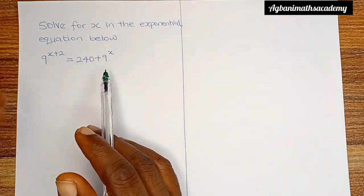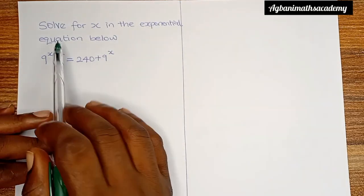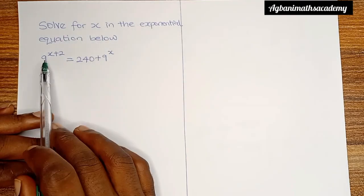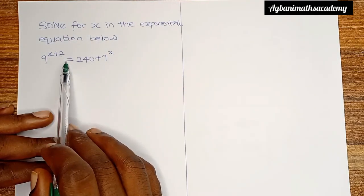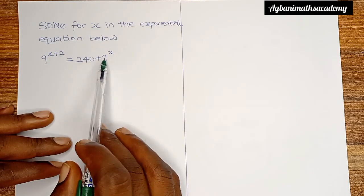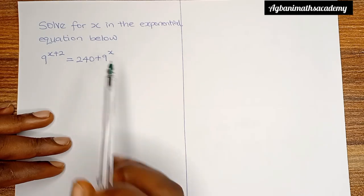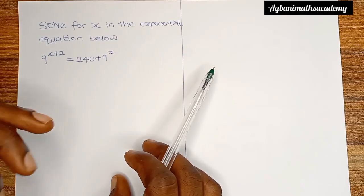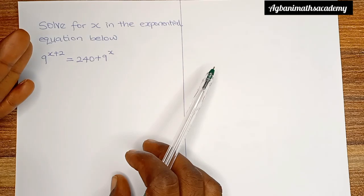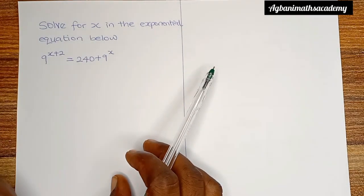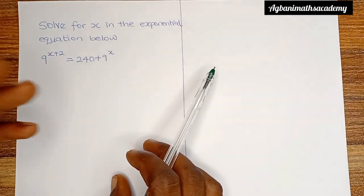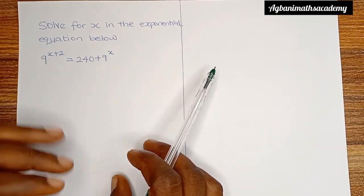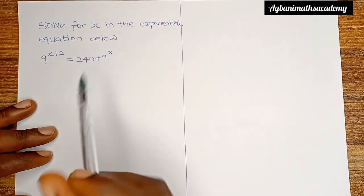Hi guys, let's look at this simple question. We are told to solve for x in the exponential equation below: 9 raised to the power of x plus 2 is equal to 240 plus 9x. Solving for x means finding the value of x that makes the left side of the equation equal to the right side. In order to get this done, we are going to apply some laws of indices.